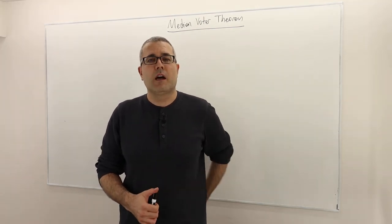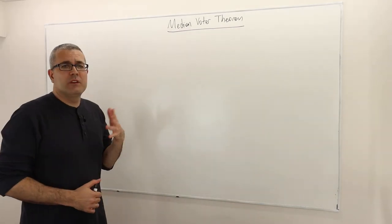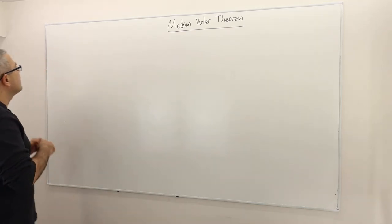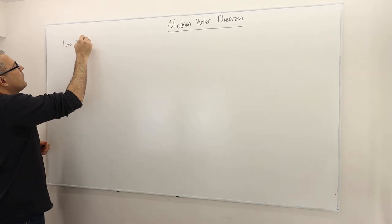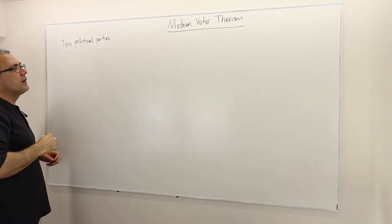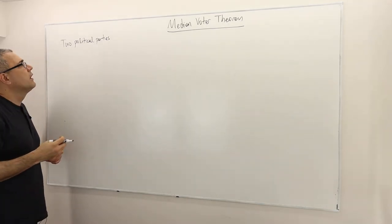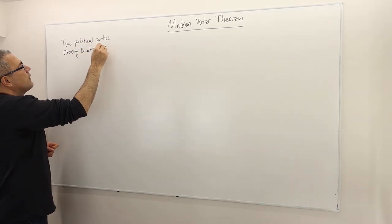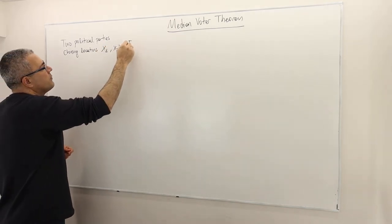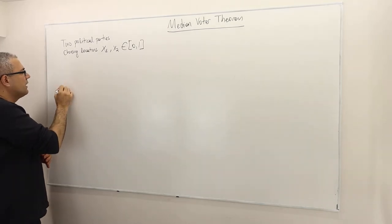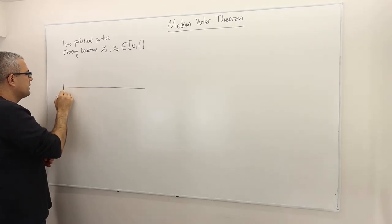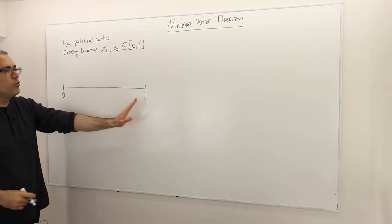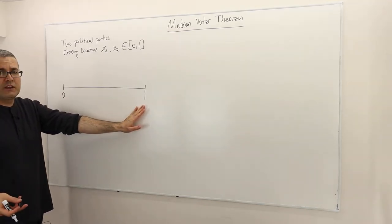This is another example where we study the Nash equilibrium, and this simple game also leads to a well-known theorem called the median voter theorem. So here is the game. There are two players, two political parties. These political parties are choosing their ideological locations before the elections. Let's denote them x1 and x2, and for simplicity assume the location has to be in between 0 and 1. That means all the voters are distributed in this range, where 0 represents extreme leftist ideology and 1 represents extreme rightist or conservative ideology.